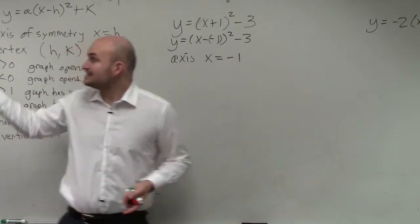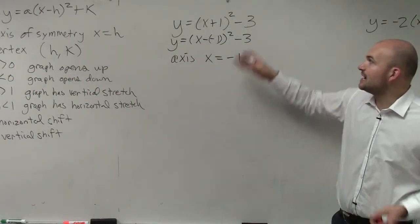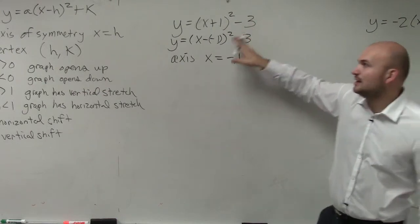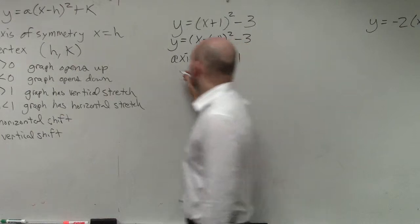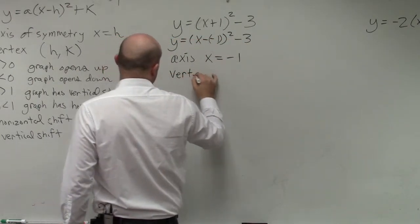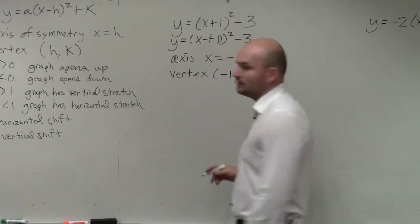Now, unlike standard form, where we had to plug in that value, now all I can simply do to find my vertex is identify what k is. And k is just going to be the value outside of your function. So I could say my vertex is now at negative 1, negative 3.